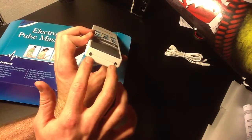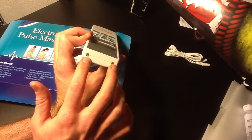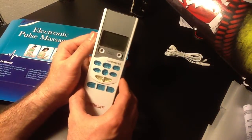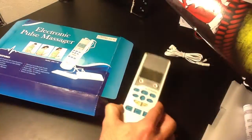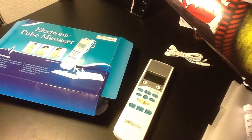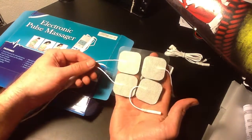On the top, we've got our two disbursement points for electricity for the different nodes. You can use one or two at a time. And what you do is you get these little pads. This comes with the unit.